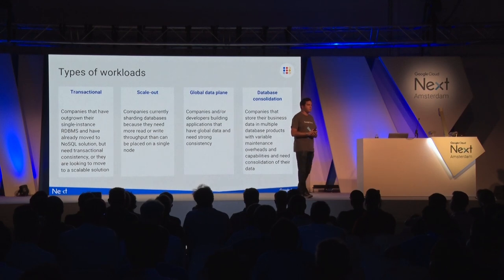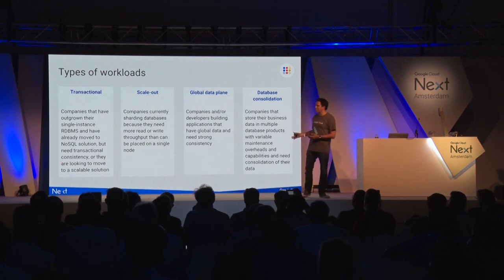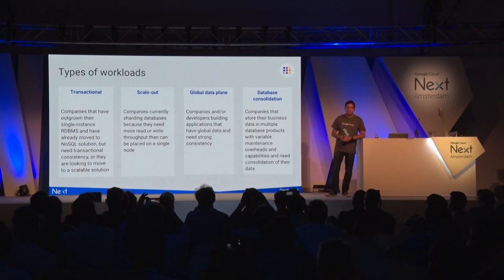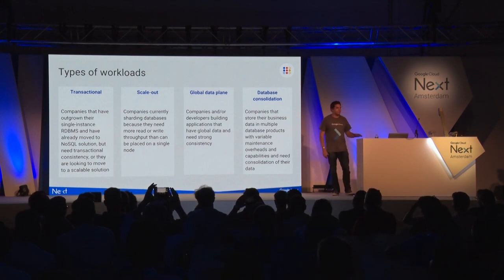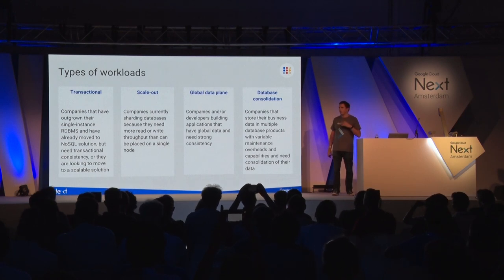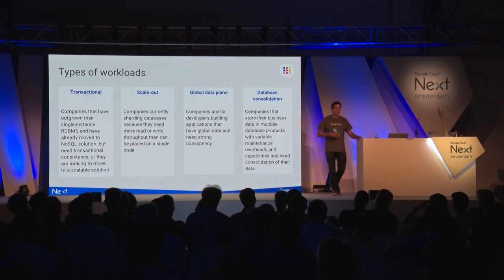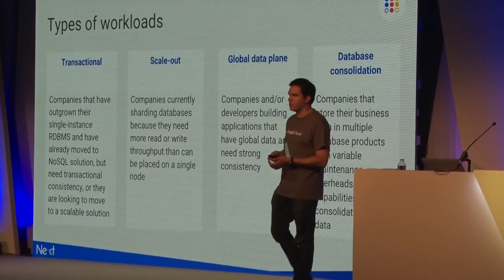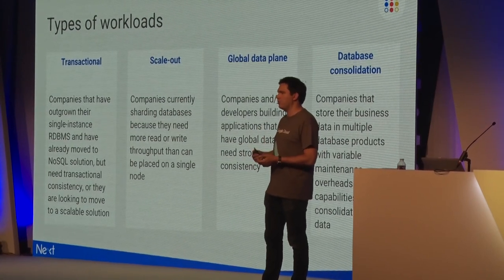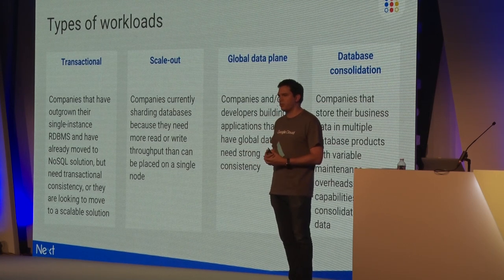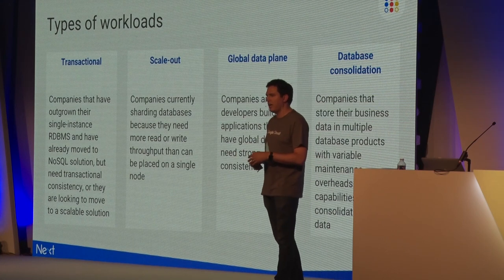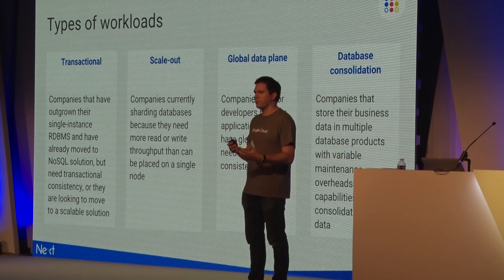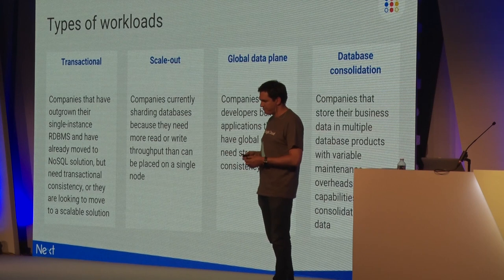The types of workloads we expect most customers to use with Spanner fall into four categories, which we saw in early access and since launch. First is transactional - not surprising, it's a relational database with strong transactional capabilities. If you've got a use case where you're selling something, recording financial transactions, Spanner is great - especially for companies that had built consistency logic into their application rather than the database, and Spanner can take on that logic and lighten the development load.